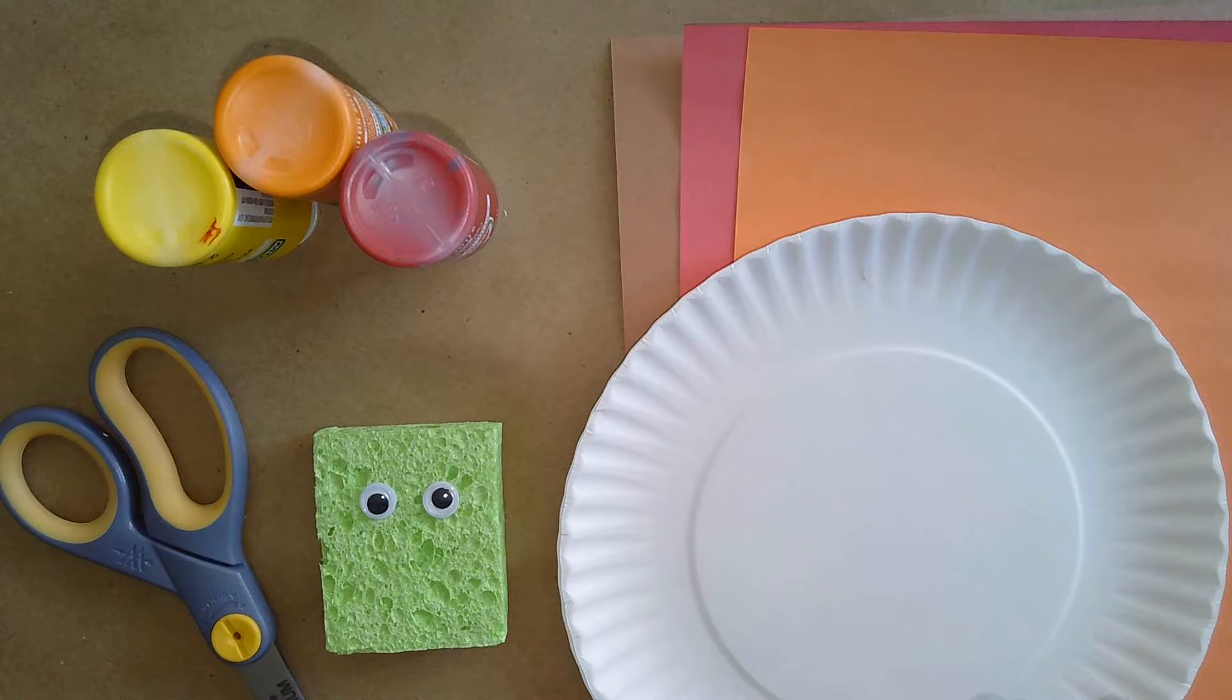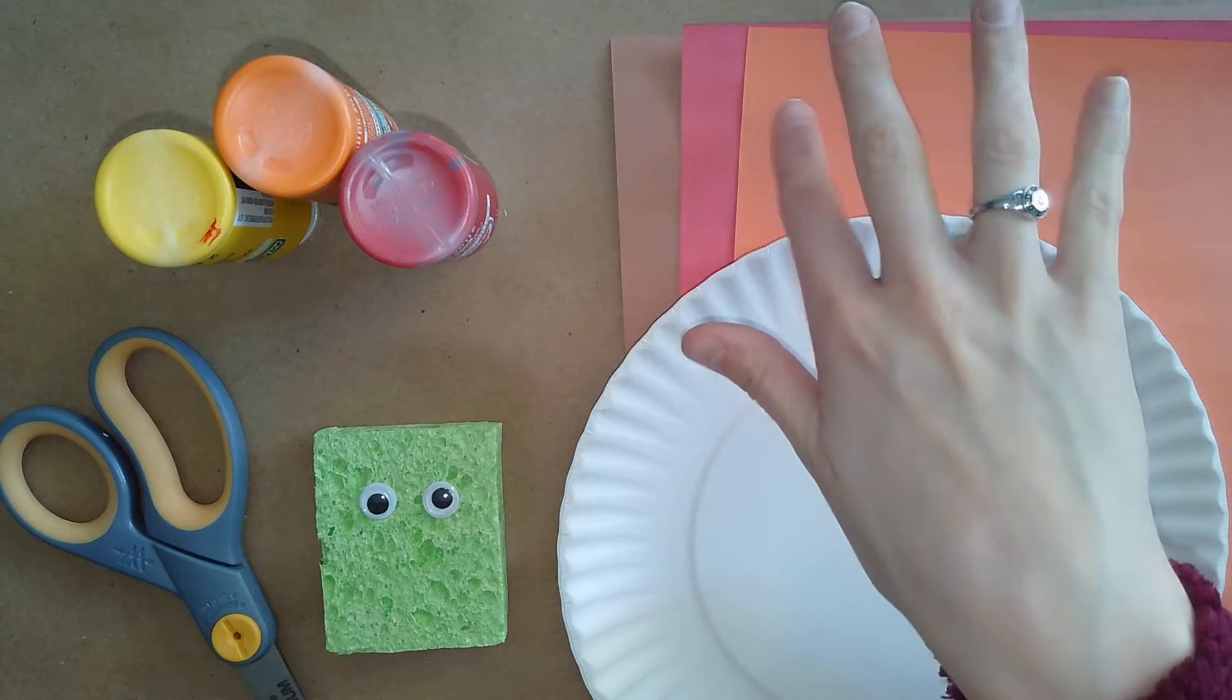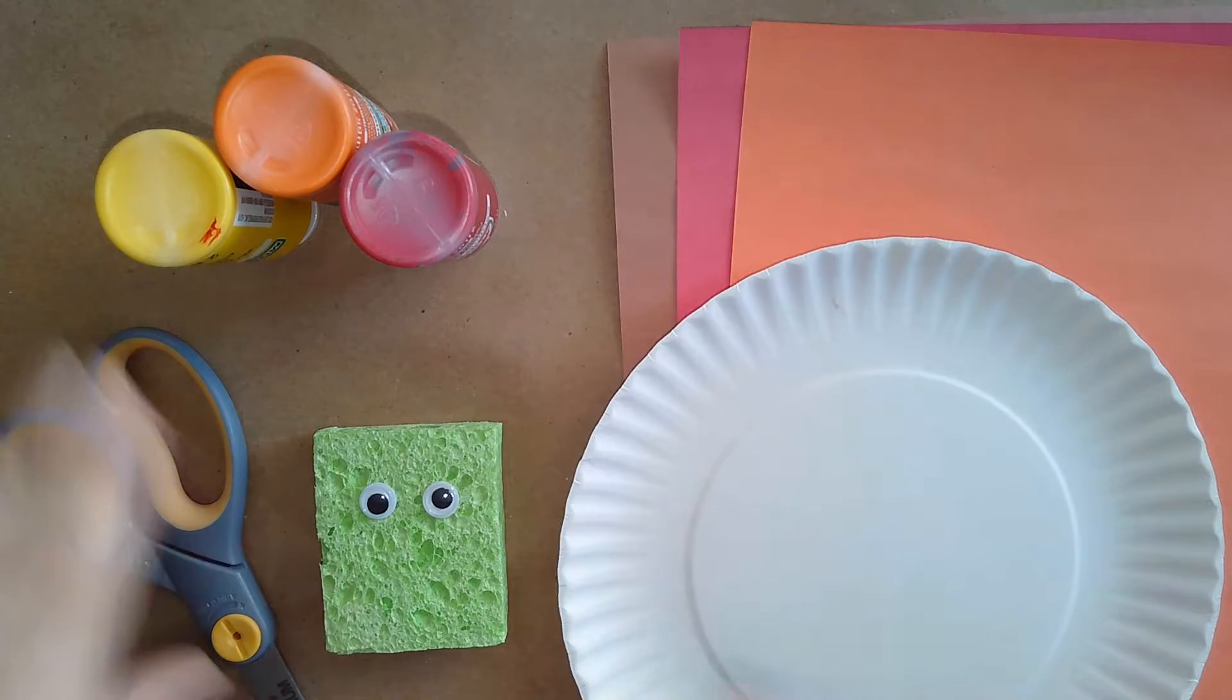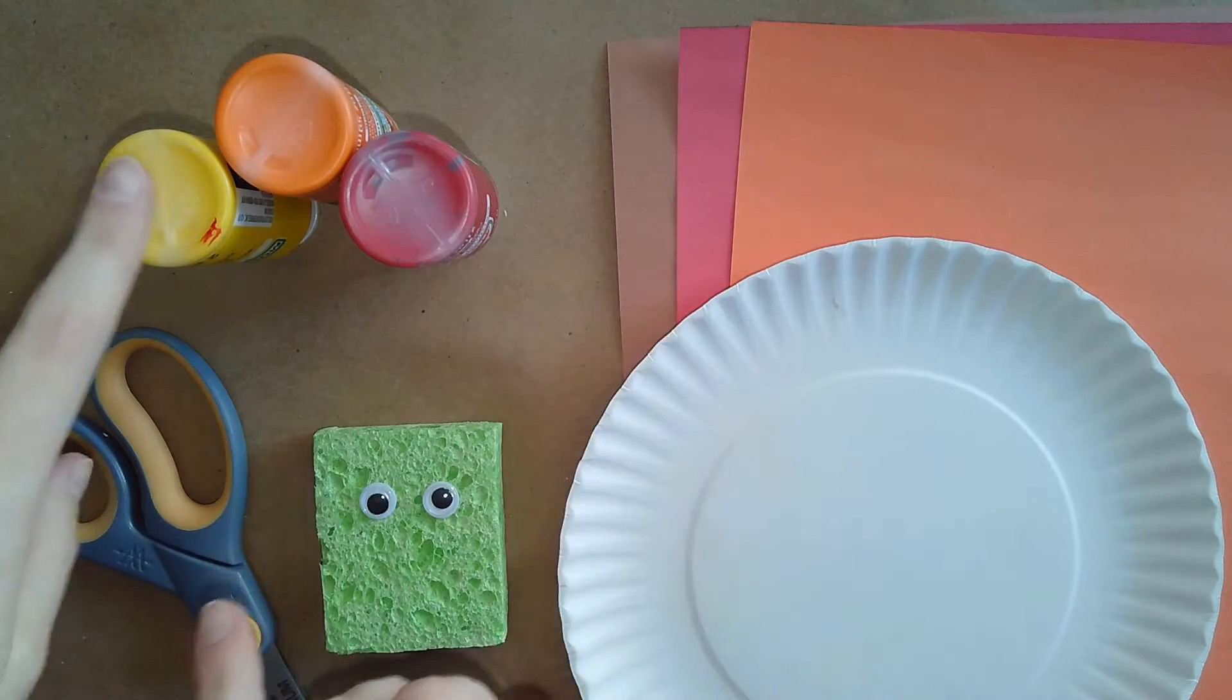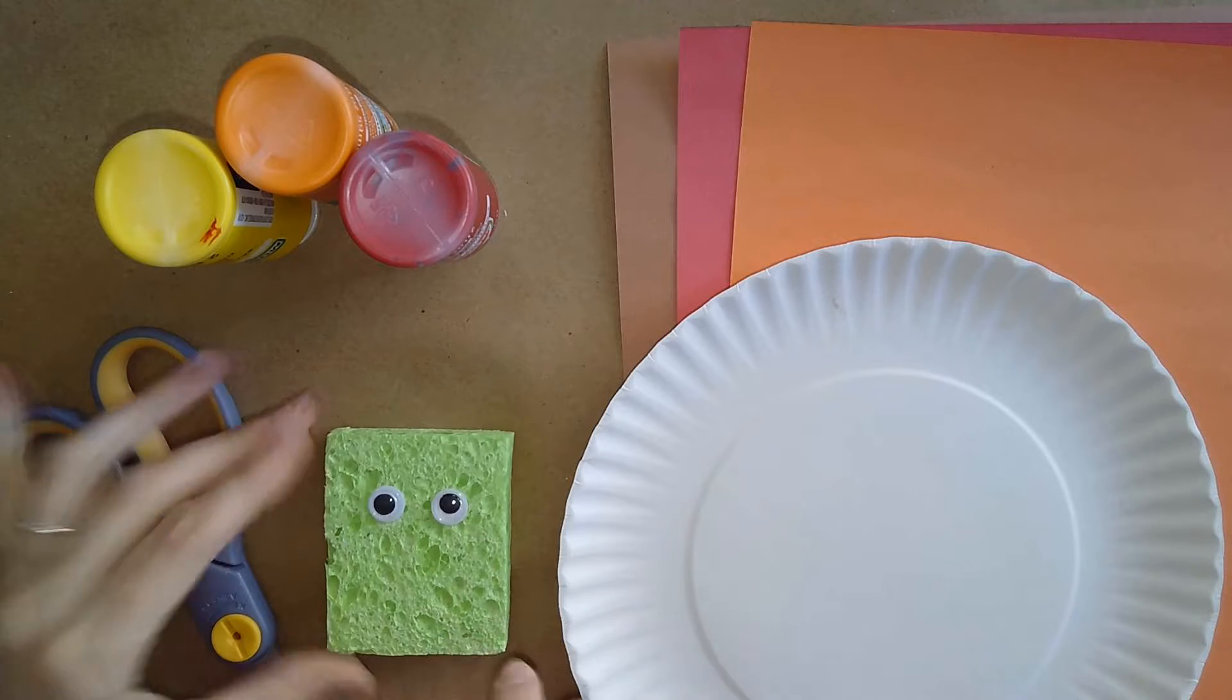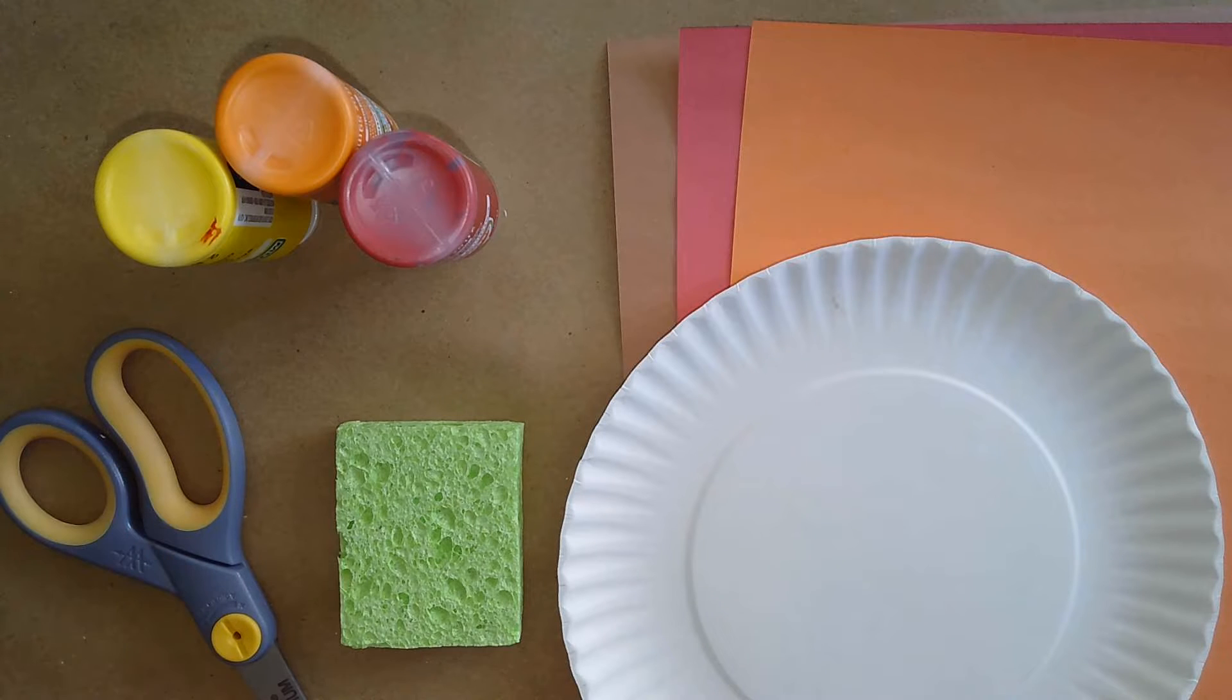Here we have all the supplies you're going to need. You're going to need some construction paper in brown, red, and orange, two paper plates, some paint. Now these can be any colors you like but I've picked yellow, orange, and red, some googly eyes, a sponge, a pair of scissors, and some glue.